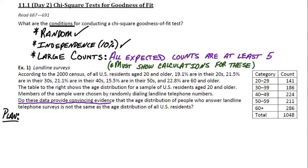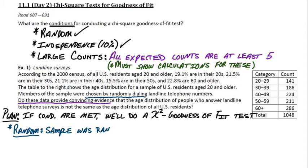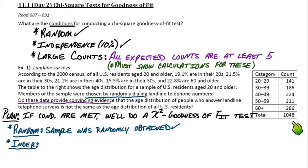For the plan step, we name the test first. If the conditions are met, we'll do a chi-square goodness-of-fit test. For the randomness condition, the problem states that members of the sample were randomly chosen because they randomly dialed landline telephone numbers. For the independence condition, there was a total of 1,048 people included in the sample, which is definitely less than 10% of all U.S. residents.